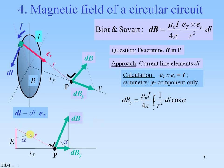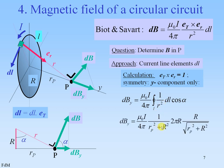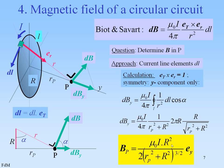Suppose there is an angle alpha here, then we can write 1 over r squared DL cosine alpha. But alpha is constant — the same for the whole circumference of the circuit — and 1 over r squared is the same for all points on the circle. So we can take 1 over r squared outside the integral. We do the integral — that is 2-pi-r, just the circumference of the circle. And we end up with the expression: mu-naught i r squared over 2 times (rp squared plus r squared) to the power 3 over 2.